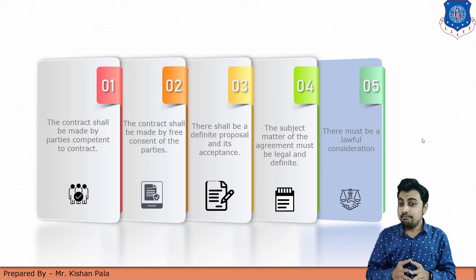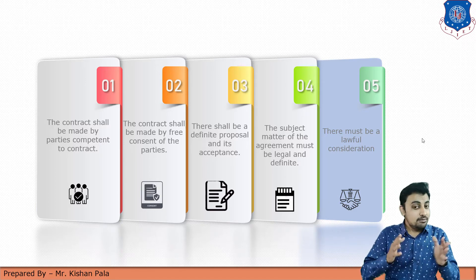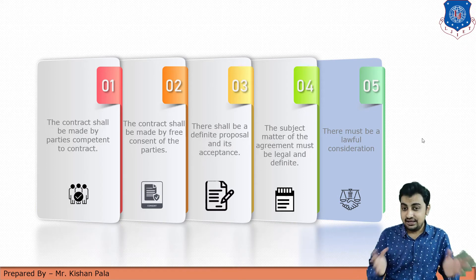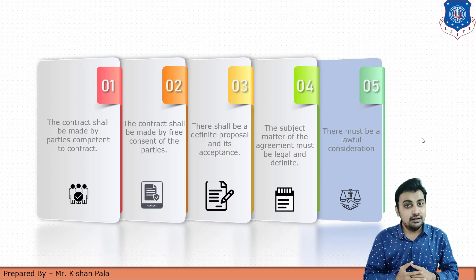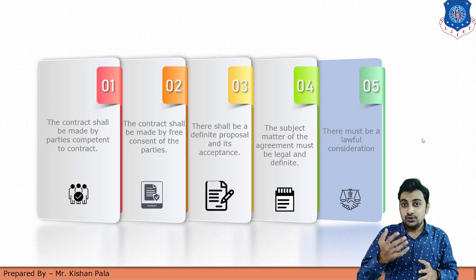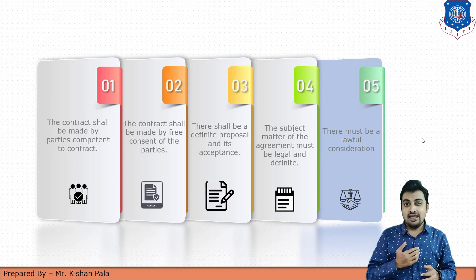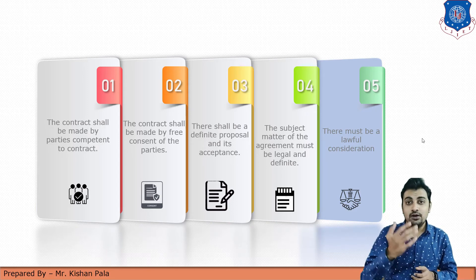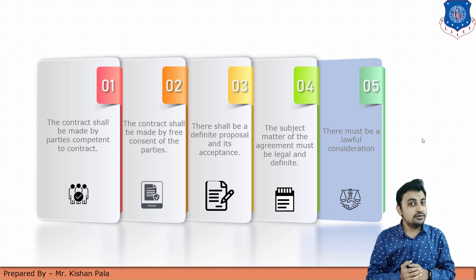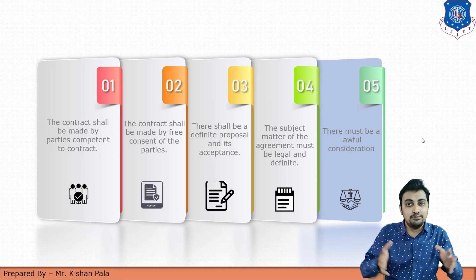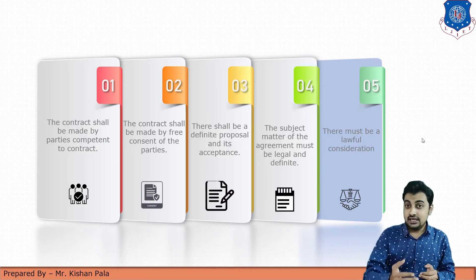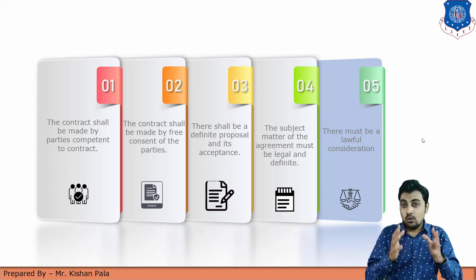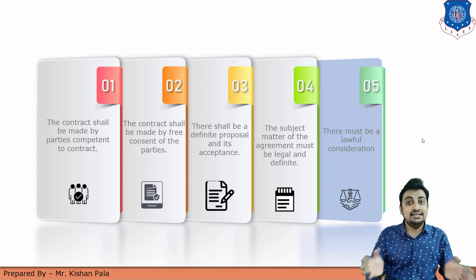The fourth essential requirement is that the subject matter of the agreement must be legal and definite. For example, if I want to sell the Taj Mahal or the Lal Killa to you, it is not possible to prepare any contract between us because this is an illegal activity — we cannot sell or buy any important national structure. The subject matter should be a legal activity, and contracts shall be enforceable by law.